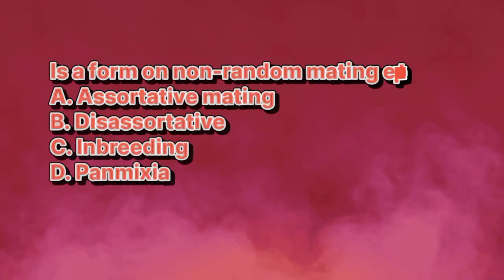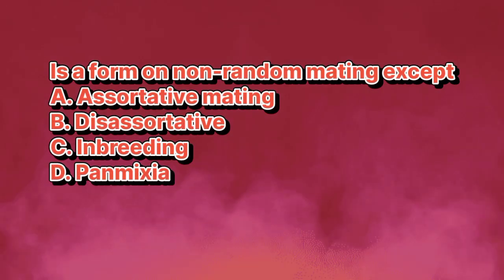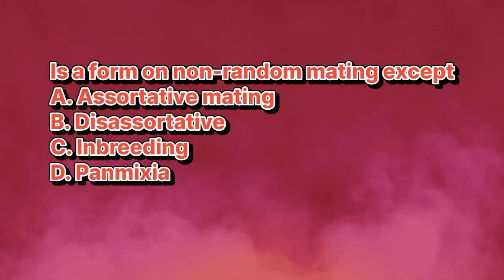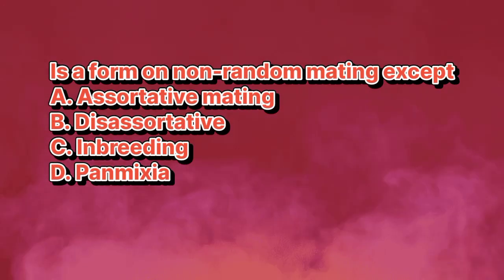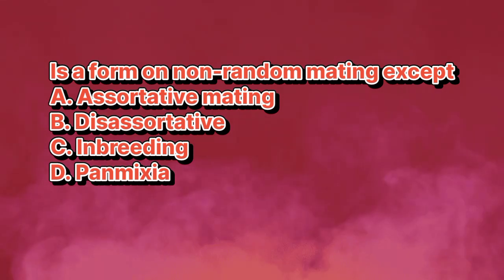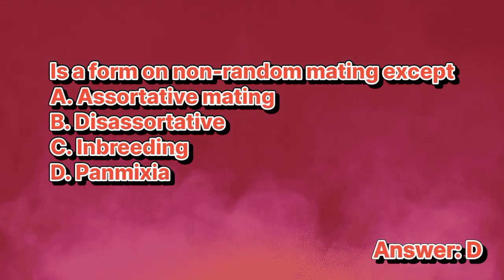The following is a form of non-random mating, except: A. Assertative mating. B. Disassertative. C. Inbreeding. D. Panmixia. The answer is letter D.